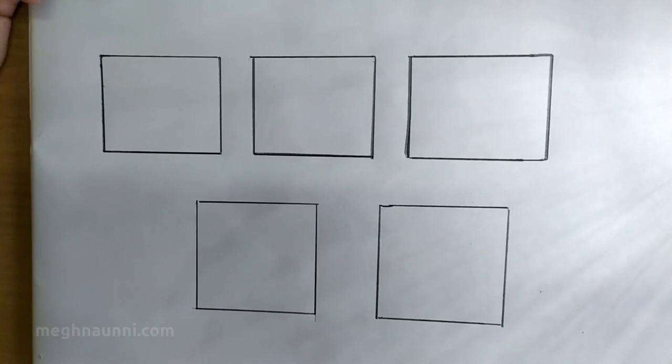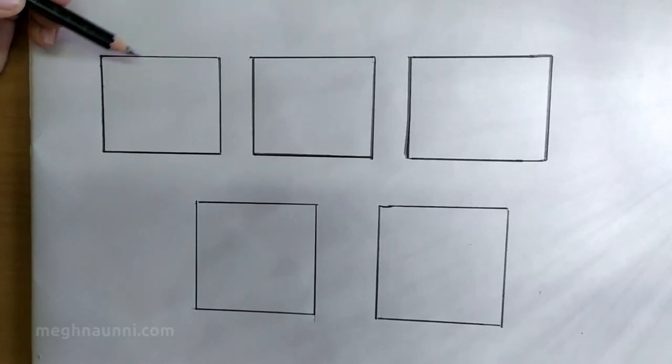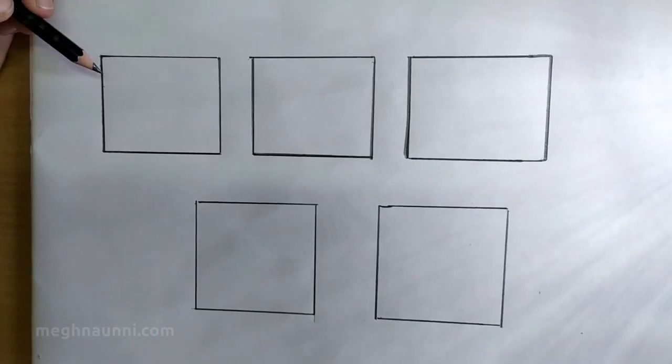The first method is single direction pencil shading, which is one of the easiest and fastest methods to shade using pencils. You can either go from light to dark or from dark to light.